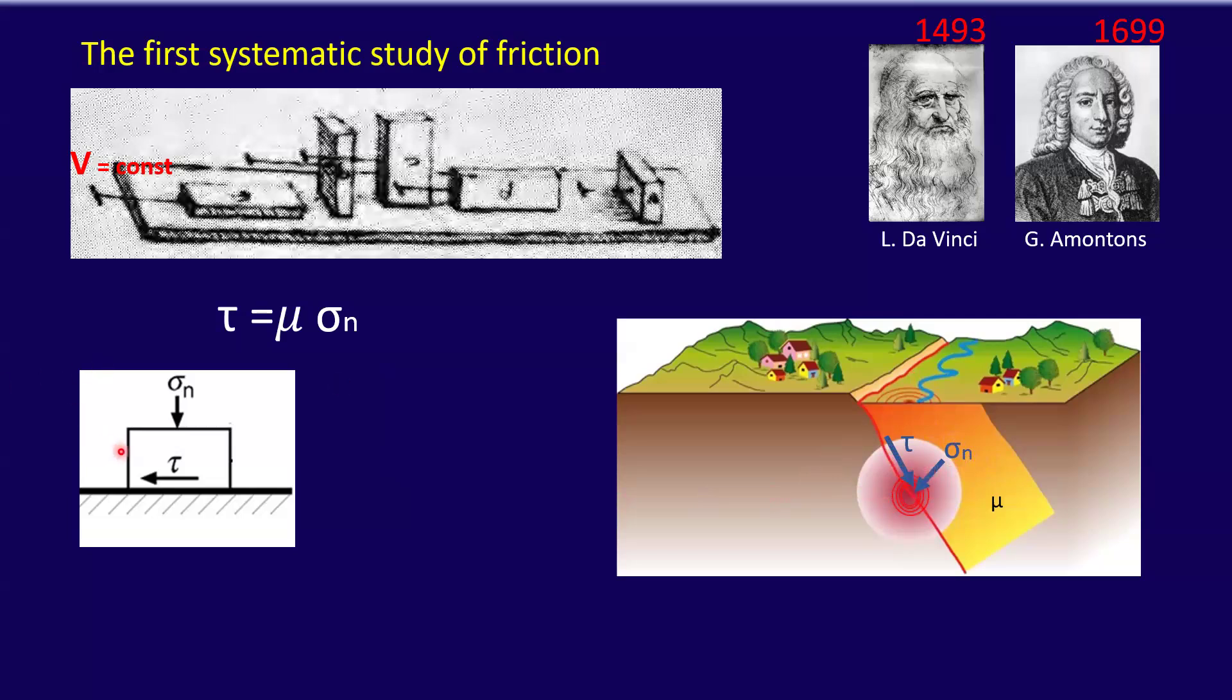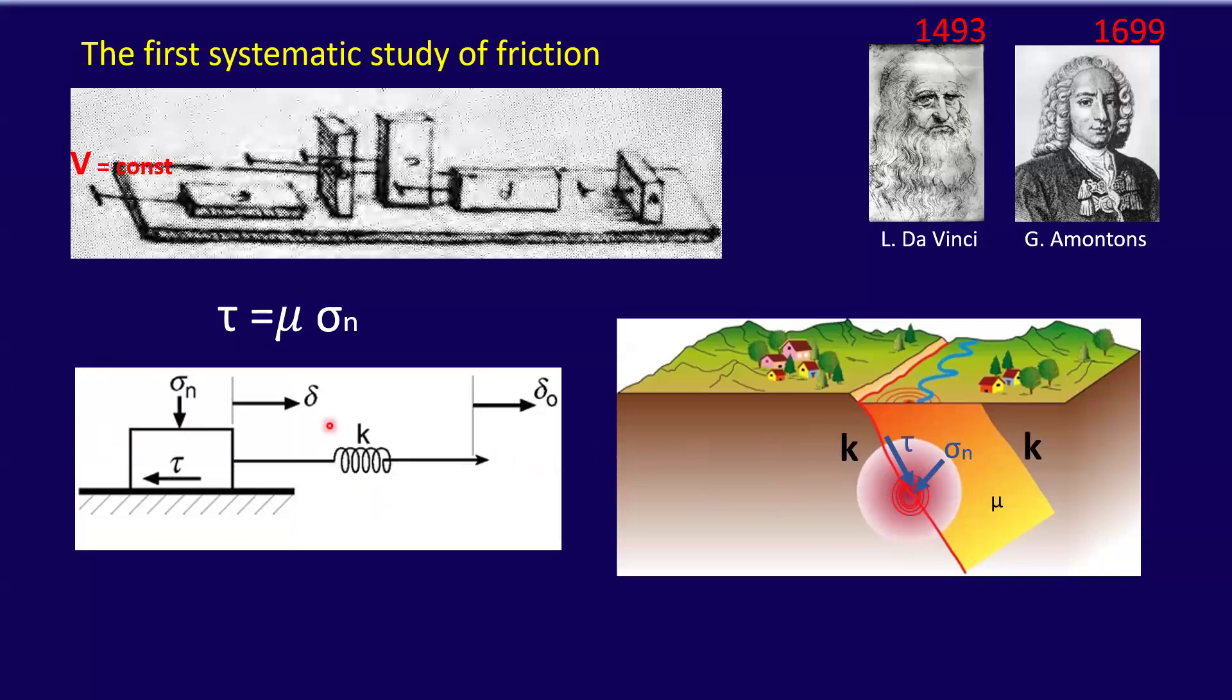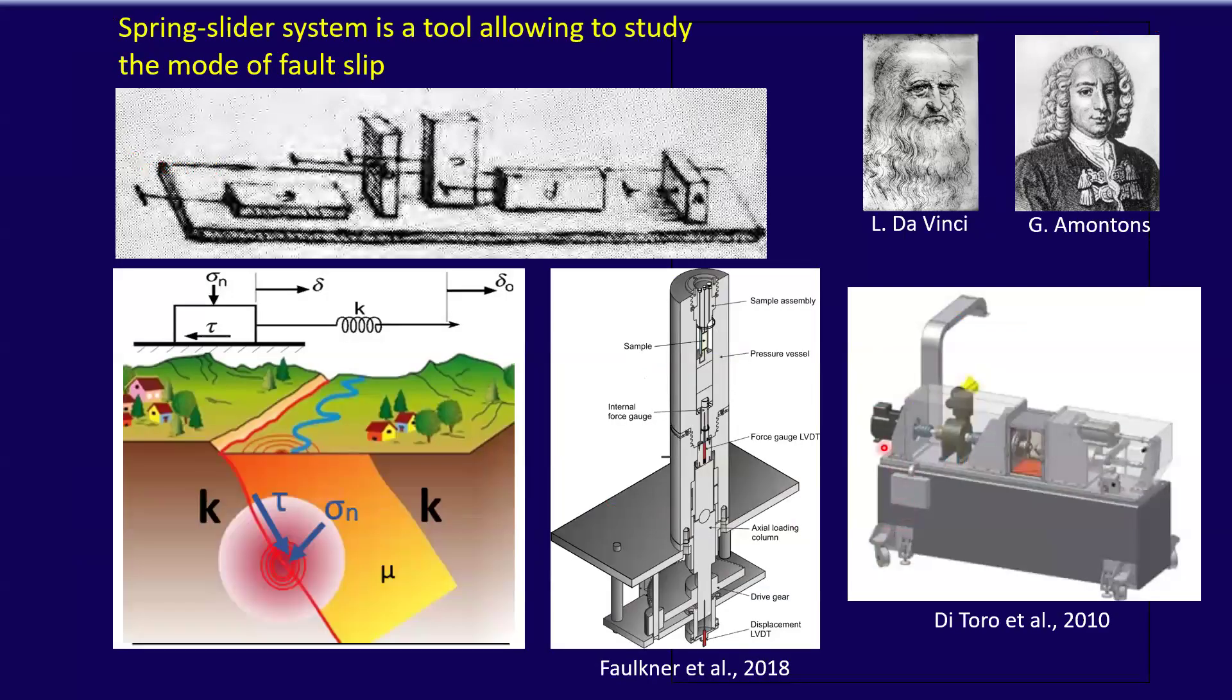However, this is a very simplistic model. What is missing is how elastic energy is stored. Why do we have instabilities? So what is missing is this part. And this is the spring-slider model that is still used both in the laboratory and in numerical modeling to understand the fault slip behavior. So basically, all the machines that we have are complex spring-sliders. This is the one installed here at the laboratory in Liverpool. This is the rotary shear used mostly in Rome during my PhD.